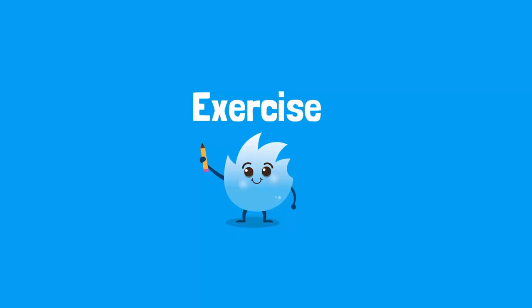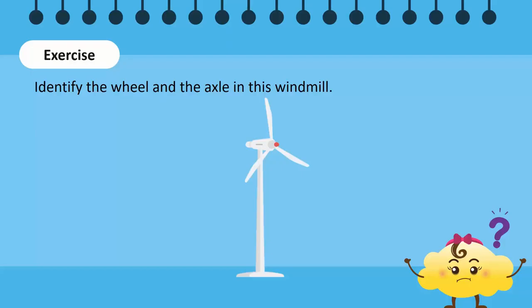Time for an exercise! Can you identify the wheel and axle in this windmill? The blades of the windmill act as a wheel while the shaft attached to the blades is the axle. The blades are far longer compared to the diameter of the shaft, so a small force from the wind can easily rotate the shaft by rotating the blades.